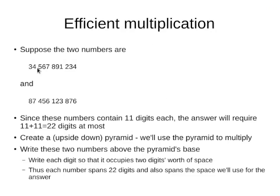Let's multiply these two numbers. These big numbers each have eleven digits: 3, 4, 5, 6, 7, 8, 9, 1, 2, 3, 4 is the first number, and the second one: 8, 7, 4, 5, 6, 1, 2, 3, 8, 7, 6. This means that the answer will, at most, have twenty-two digits.